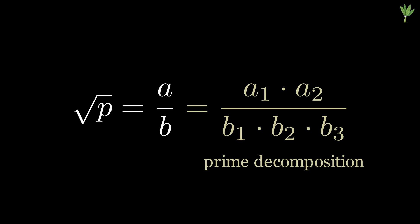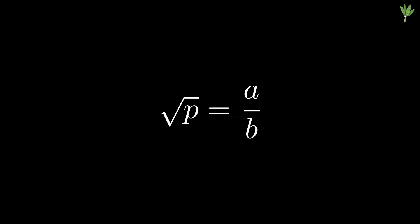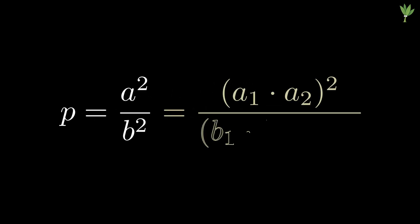But it does not matter. Let's take the square of both sides of our original equation, and again, we can do a prime decomposition. You can see that a squared and b squared have an even number of prime factors.